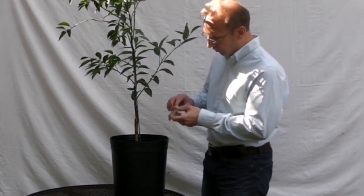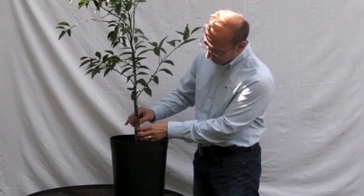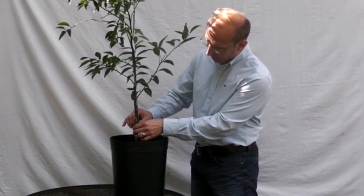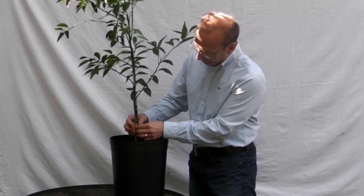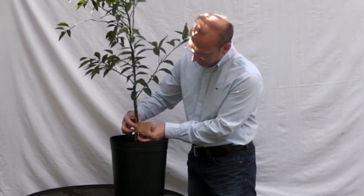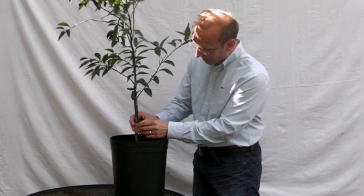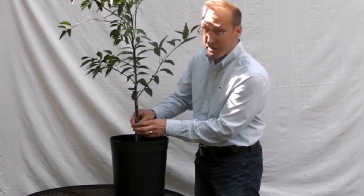You can also add Tanglefoot, it's a sticky material, to the outside of the tape. So wrap your trunk, make sure you don't wrap your stake. You want to wrap it fairly tight because you want them to actually climb and get stuck on the tape and not on your tree.